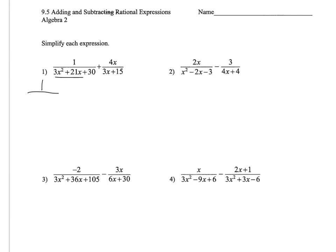If I factor out a 3, it's going to turn into x squared plus 7x plus 10. So that is going to factor into x plus 2 times x plus 5. So first I took out a greatest common factor of 3 and then I factored the remaining trinomial.